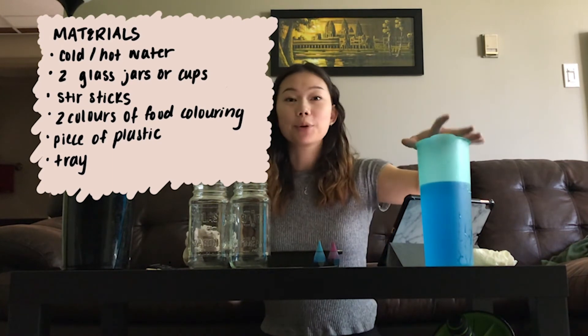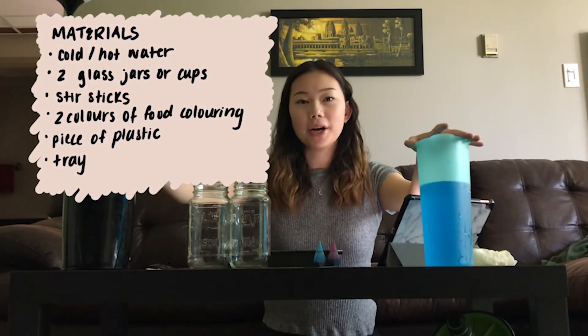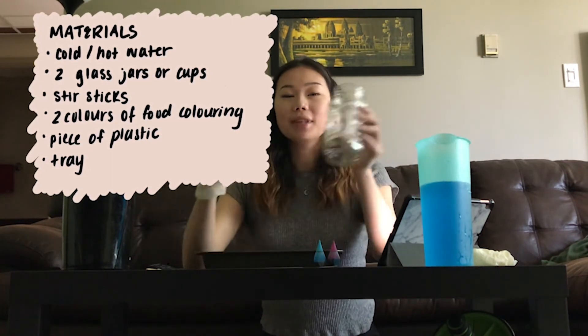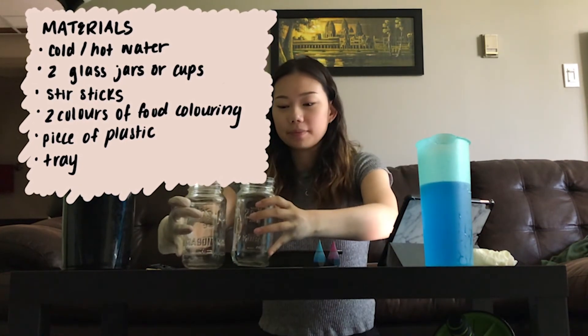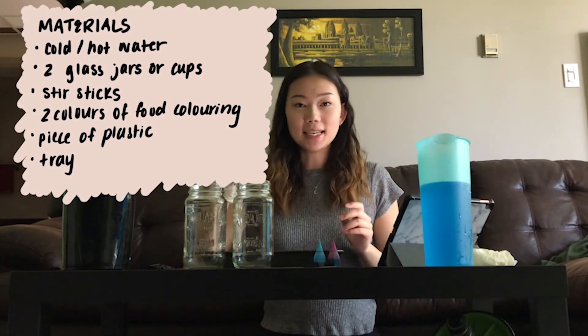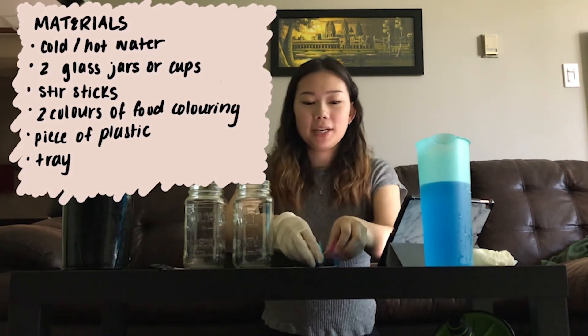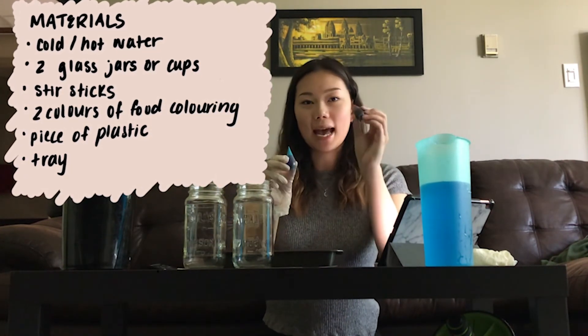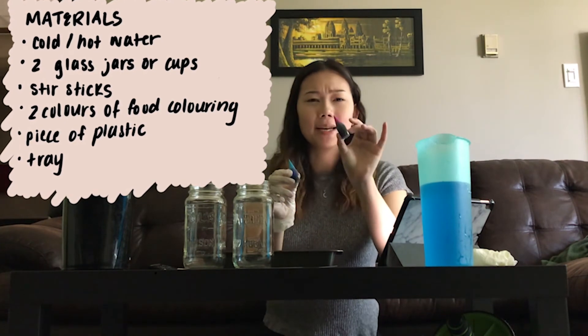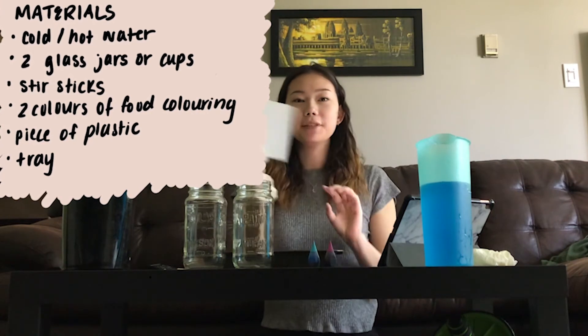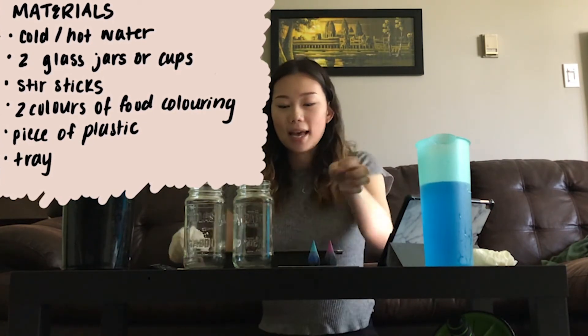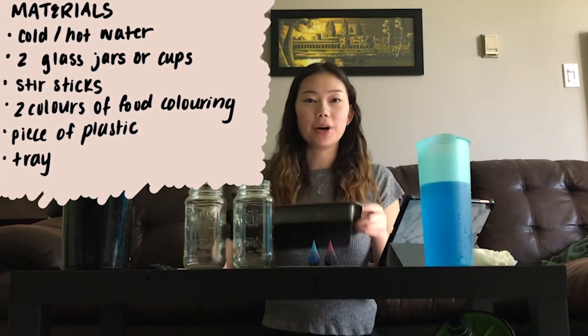For our second experiment, here's what you're going to need. You're going to need some cold water and some hot water. You're going to need two of the same glass jars, or you can use glass cups. Get some stir sticks. You need your blue food coloring and red, pink, purple, anything else works. You're going to need a little piece of plastic and a tray to catch any spilled water.